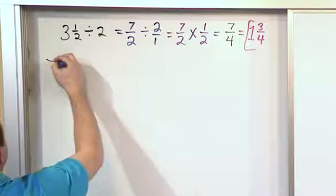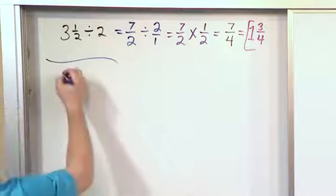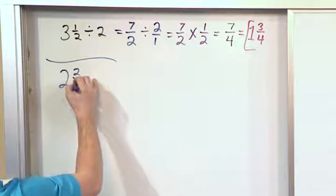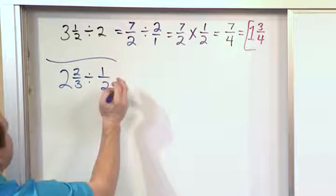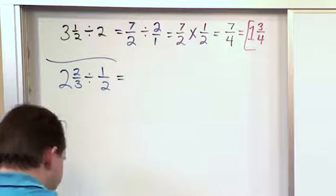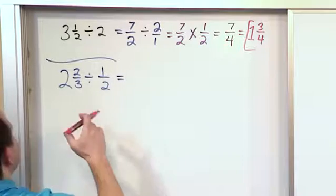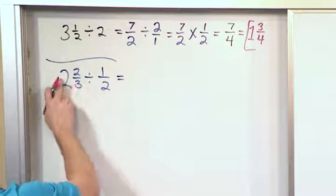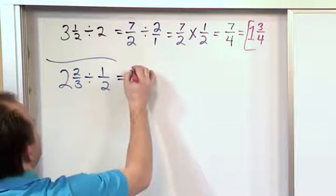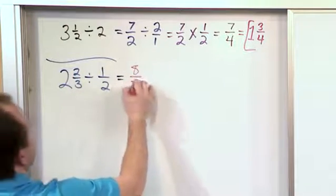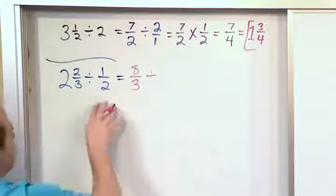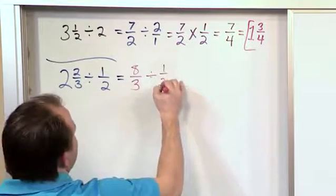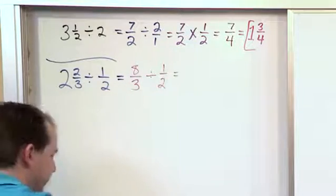So in the next problem what if we have something like 2 and 2 thirds and we're dividing by 1 half. So here we have a nice mixed number divided by a nice fraction. How would we handle something like that? Well the mixed number needs to be converted. 3 times 2 is 6. Plus 2 gives me 8 and I write it over 3 which is the denominator. The division let's just for now keep it here and let's still be dividing by 1 half. We don't want to do too many things at one time to confuse ourselves.